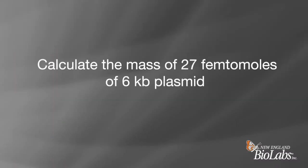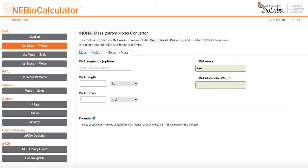We will now calculate the mass of 27 femtomoles of a 6 KB DNA plasmid. Click on the double-stranded DNA mass to moles option on the left side of the tool. Then, click on the Moles to Mass tab.